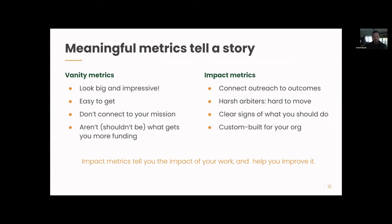Another way of thinking about the metrics you choose: they tell a story if they're meaningful and have an impact. On the right is what we're going for — metrics that connect outreach to outcomes. What did you do and what happened because of it? They're harsh arbiters, hard to move. They're clear signs of what you should do — if you're hitting or not hitting a particular KPI, you should have a plan to look into why. And they're custom-built for your organization. This is opposed to vanity metrics: site visitors, email signups — things that look big and impressive but don't necessarily connect to your mission.